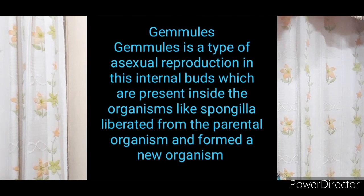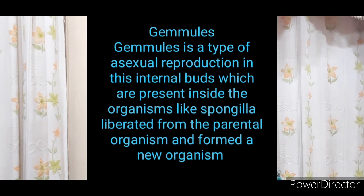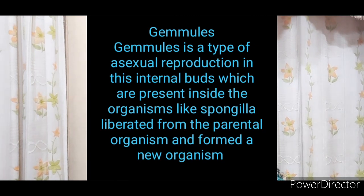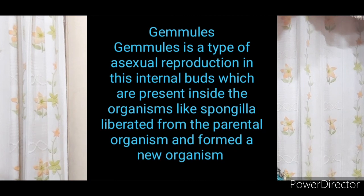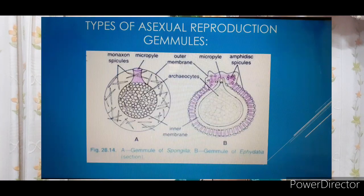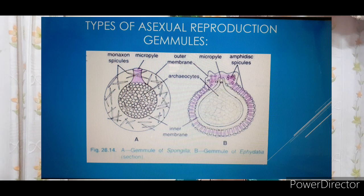Gemmules are a type of asexual reproduction in which internal buds represent specialized masses of cells that can develop into offspring. Example: freshwater sponges like spongilla. These organisms are living in water and the gemmules are protected inside the body cells of spongilla. Once they mature, the spongilla bursts and each one comes out forming a new organism.